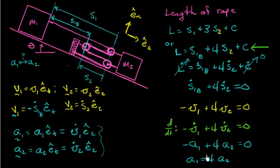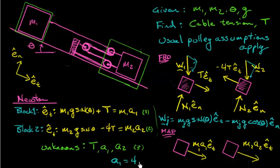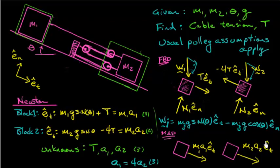Let's finish off this thought-provoking problem. We have the relationship between a1 and a2, and this is the equation I can use to make the problem solvable. We're back at our equations of motion derived earlier — two equations with three unknowns — but now we have this extra relationship: a1 is equal to 4a2. That's our third equation for three unknowns, so now it's possible to solve.